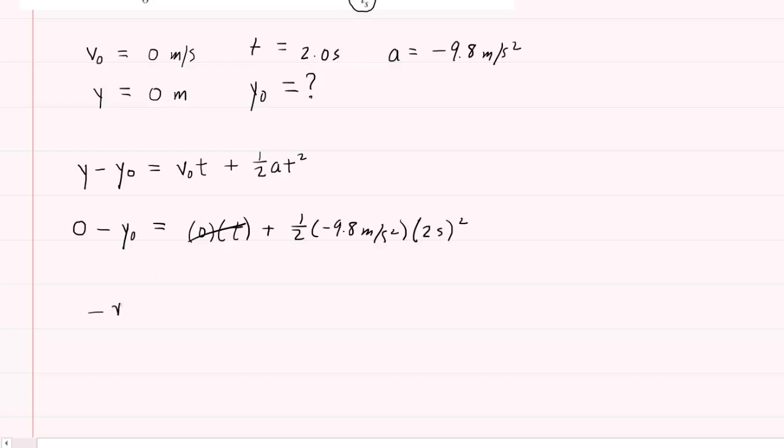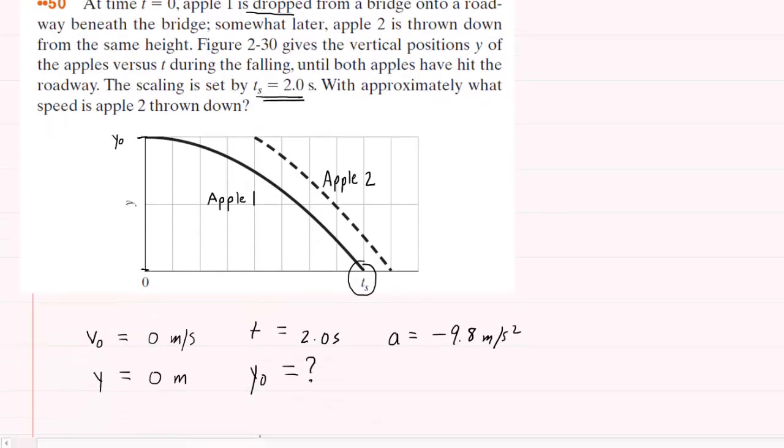The left side becomes negative y subscript 0. On the other side, we multiply this out. We will get negative 19.6 meters, and then divide both sides by negative 1, and you will get your initial y-coordinate is positive 19.6 meters. So if we go back up to the graph, we can actually label that initial y-coordinate right up here as 19.6 meters. That's basically how high Apple I is dropped.